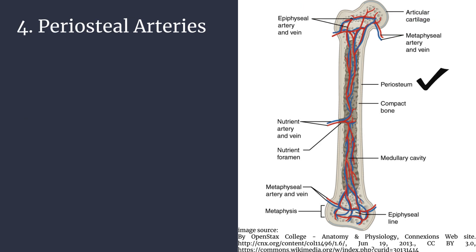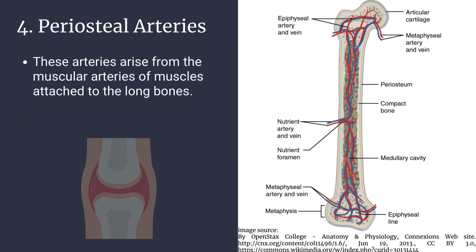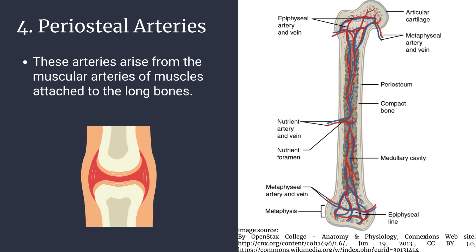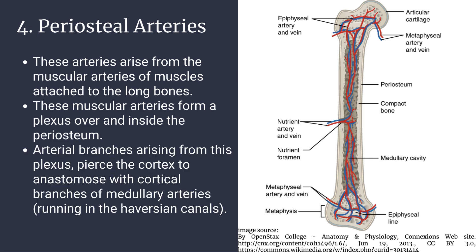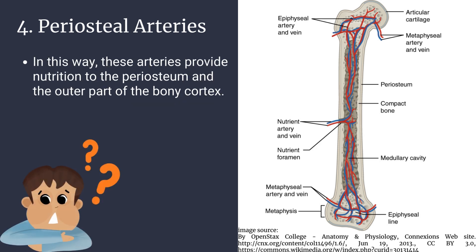Number four: periosteal arteries. These arteries arise from the muscular arteries of muscles attached to the long bones. These muscular arteries form a plexus over and inside the periosteum. Arterial branches arising from this plexus pierce the cortex to anastomose with cortical branches of medullary arteries running in the Haversian canals. In this way, these arteries provide nutrition to the periosteum and the outer part of the bony cortex.